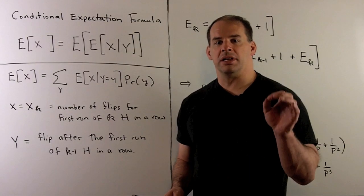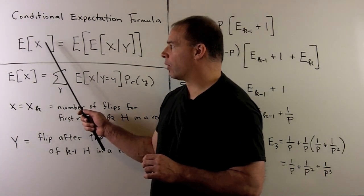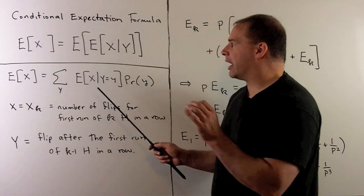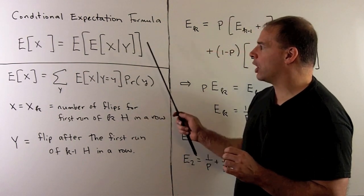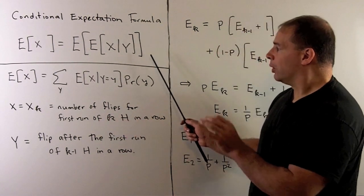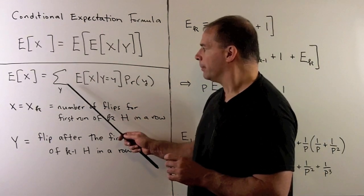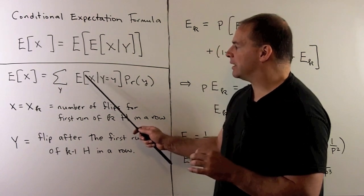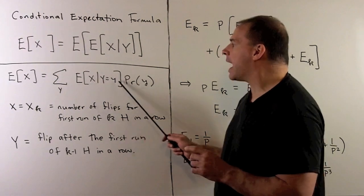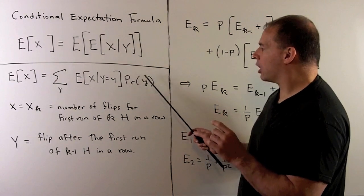Now, what does the conditional expectation formula say? If I want to compute the expected value of the random variable x, I compute the expected value of the random variable given by the expected value of x conditioned on y. What it really says is: we consider all values that y can take, we sum, and we weight the expected value of x conditioned on y equals some given value by the probability of that value of y occurring.